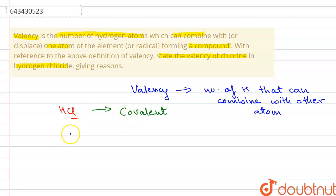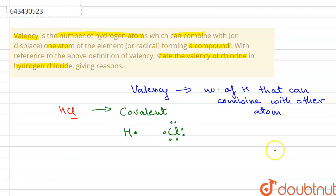Being a covalent compound, it is formed by the sharing of electrons. Hydrogen has one electron in its outermost shell, whereas chlorine has seven electrons in its outermost shell. They will share electrons in order to achieve noble gas configuration and form covalent bonds.